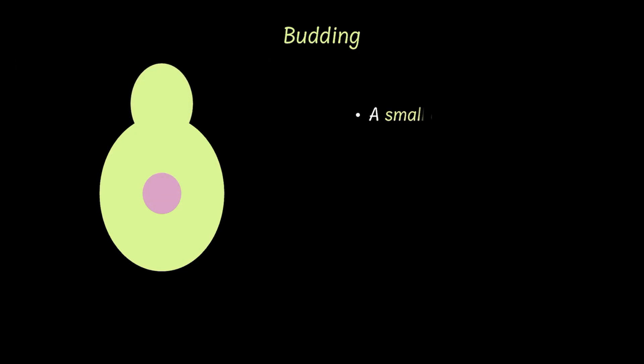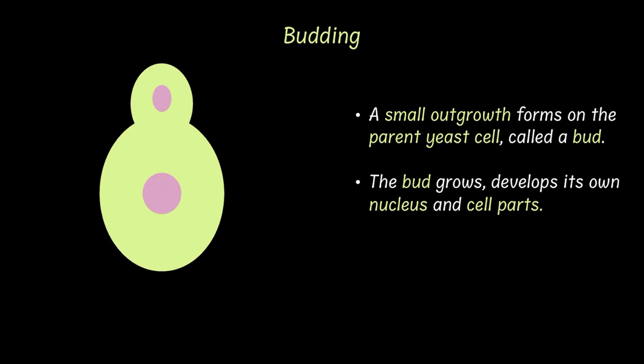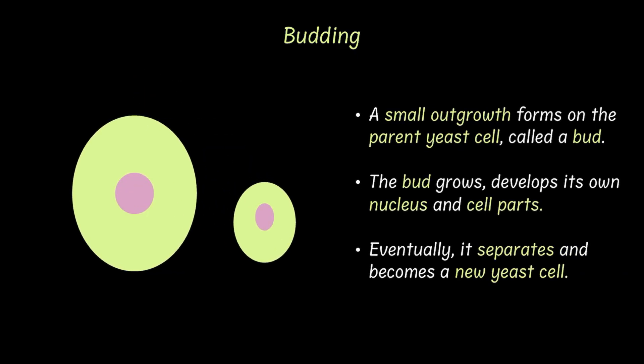Now remember how we mentioned yeast multiplying quickly in the bread dough by budding? Budding is a method of asexual reproduction that we see in yeast among many other organisms. In budding, a small growth forms on the parent cell, which is called the bud. The bud grows and develops its own nucleus and cell parts. Eventually, the bud separates and becomes a brand new yeast cell.